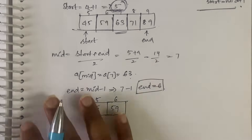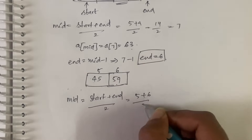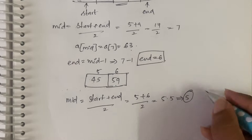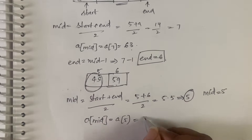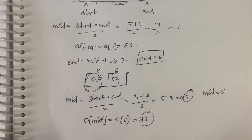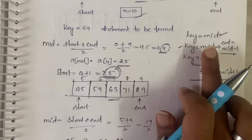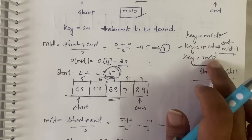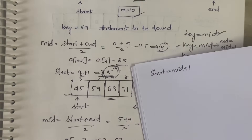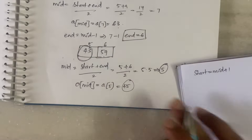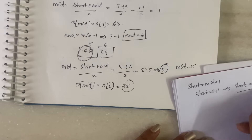Our new array is positions 5 and 6: elements 45 and 59. Compute mid again: start plus end divided by 2 is 5 plus 6 divided by 2, which is 5.5 — taken as 5. So a[mid] equals a[5] which is 45. Check conditions: is key 59 equal to 45? No. Is 59 less than 45? No. Is 59 greater than 45? Yes — so start equals mid plus 1, meaning start becomes 6.